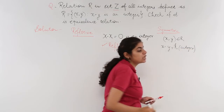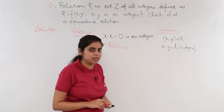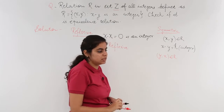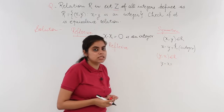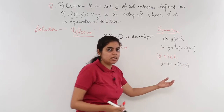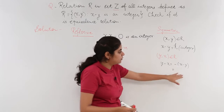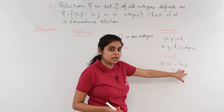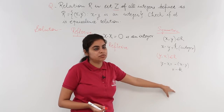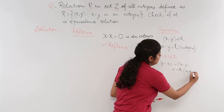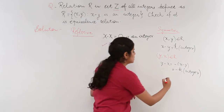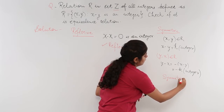Y minus X means the difference of X from Y. Y minus X equals minus of (X minus Y). From the equation above, X minus Y equals K, so Y minus X equals minus K, which is again an integer — negative if K is positive, positive if K is negative. Since minus K is still an integer, this satisfies the condition, so the relation is symmetric.